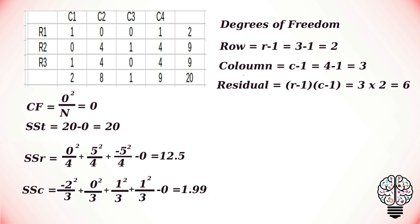Next, we calculate the sum of squares of the column. To do that, we get the total value for each column and divide it by the number of values in each column, giving us 1.99. Subtracting the correction factor, we get the sum of squares of the column value as 1.99. With that, we can calculate the sum of squares of the residual by subtracting the sum of squares of the row and column from the sum of squares total, giving us a residual value of 5.51.